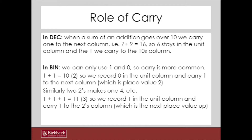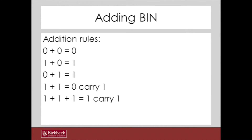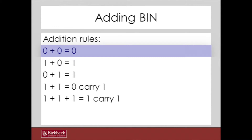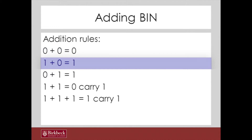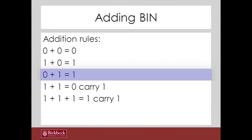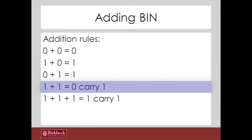For example, if you add 1 and 1 that would be 2 in decimal, which is 1, 0 in binary because 2 is the next place value up. And if you add 1 and 1 and 1 that is 3 in decimal, which is 1, 1 in binary. So the binary addition rules are: 0 + 0 = 0; 1 + 0 = 1; 0 + 1 = 1; 1 + 1 = 0 with a carry of 1.